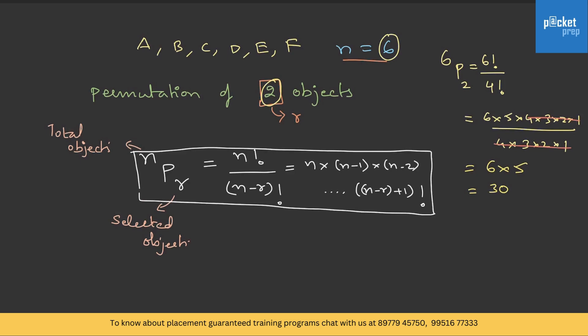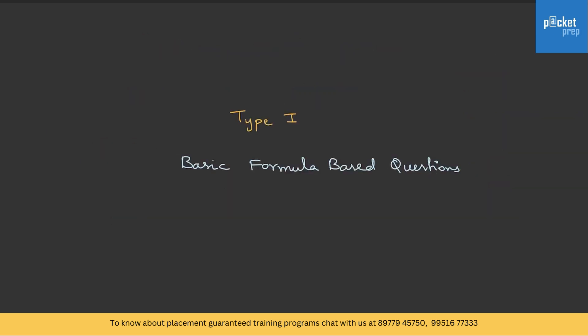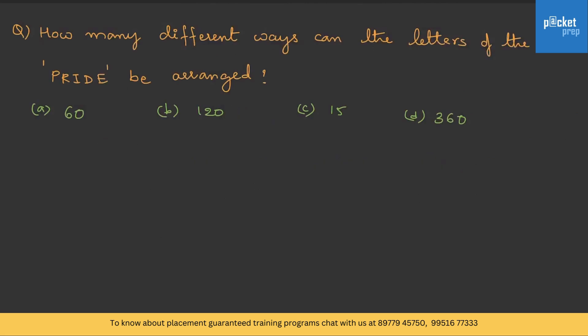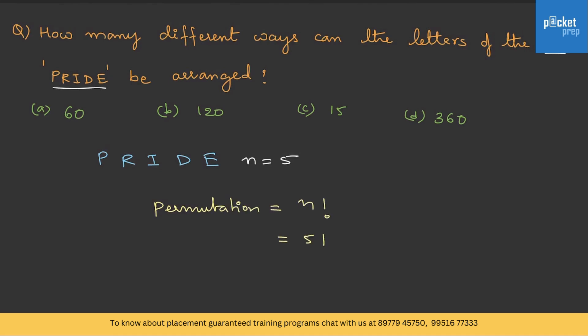Now with this basic understanding, let us solve a few basic questions. Type 1 is based on the basic formula. How many different ways can the letters of the word 'pride' be arranged? The letters are P, R, I, D, E, so n = 5. They did not say anything about selection — they just asked us to arrange all the letters. Therefore the permutation is n! = 5! = 120. Therefore option B.